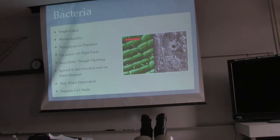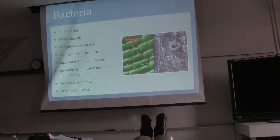If you prune a citrus tree, make a cut and get some latex paint on it to cover that hole. White paint right over the top of the hole will prevent bacteria from getting in. Back in the day they used tar, but they don't use that anymore. Just use white latex paint — it works great. This is a key difference between bacteria and fungi: bacteria can't make their own holes.